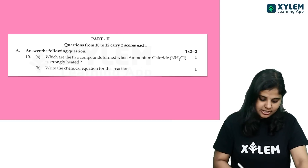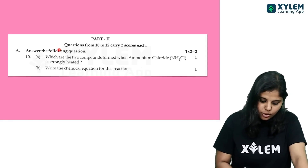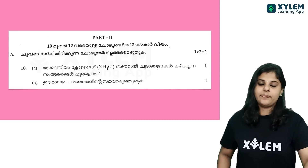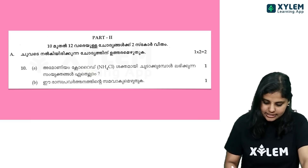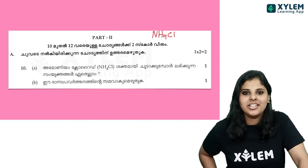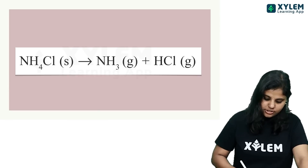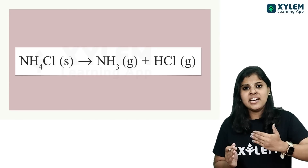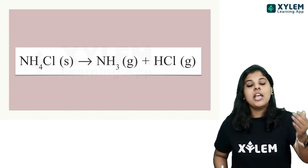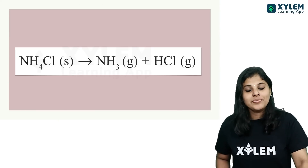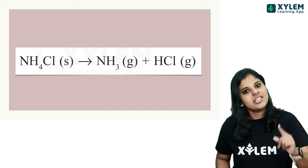Next question, one mark, two parts. Answer the following questions. First: which are the two compounds formed when ammonium chloride is strongly heated? NH4Cl, ammonium chloride, should be heated in a closed system. The answer is ammonia, NH3, and HCl. How do you produce ammonium chloride? NH3 and HCl, hydrochloric acid and ammonia combine to form ammonium chloride.